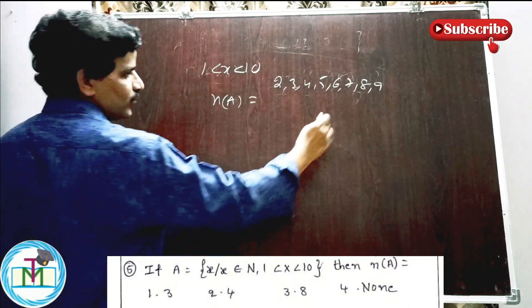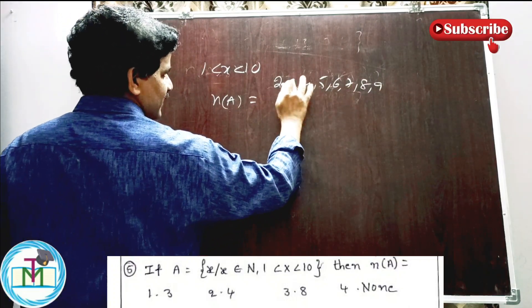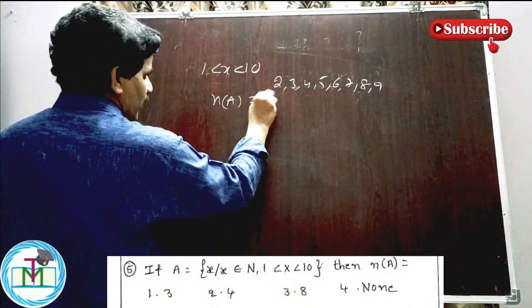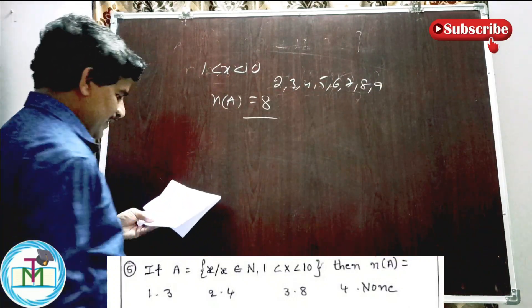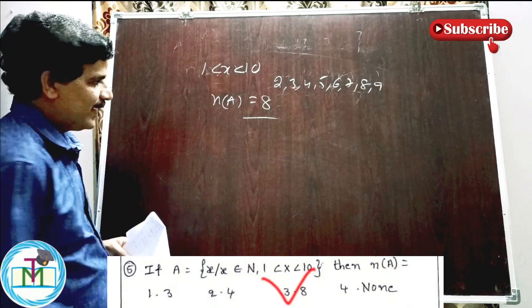Since 1 < x < 10, x can be 2, 3, 4, 5, 6, 7, 8, 9. So n(A) is equal to 8.